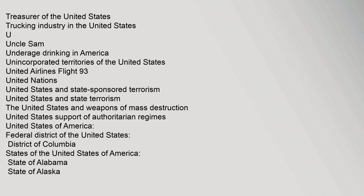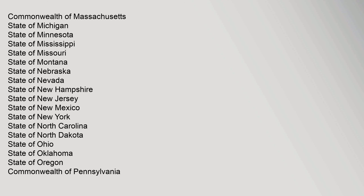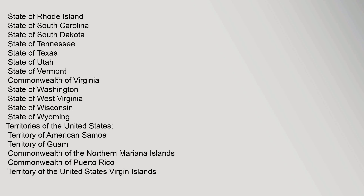United States of America — Federal District of the United States: District of Columbia. States of the United States of America: State of Alabama, State of Alaska, State of Arizona, State of Arkansas, State of California, State of Colorado, State of Connecticut, State of Delaware, State of Florida, State of Georgia, State of Hawaii, State of Idaho, State of Illinois, State of Indiana, State of Iowa, State of Kansas, Commonwealth of Kentucky, State of Louisiana, State of Maine, State of Maryland, Commonwealth of Massachusetts, State of Michigan, State of Minnesota, State of Mississippi, State of Missouri, State of Montana, State of Nebraska, State of Nevada, State of New Hampshire, State of New Jersey, State of New Mexico, State of New York, State of North Carolina, State of North Dakota, State of Ohio, State of Oklahoma, State of Oregon, Commonwealth of Pennsylvania, State of Rhode Island, State of South Carolina, State of South Dakota, State of Tennessee, State of Texas, State of Utah, State of Vermont, Commonwealth of Virginia, State of Washington, State of West Virginia, State of Wisconsin, State of Wyoming.